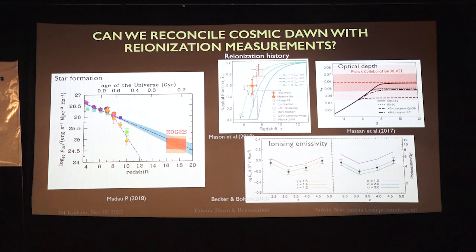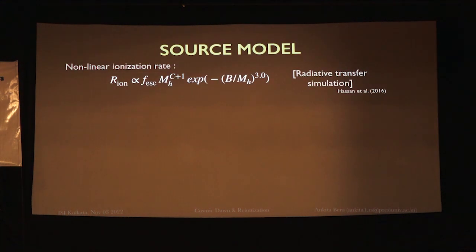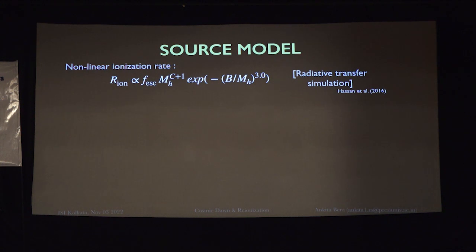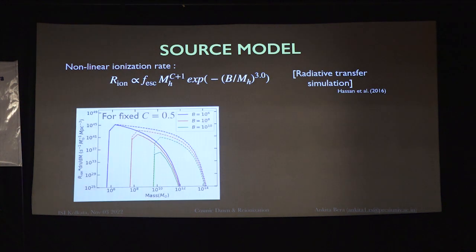So we now have all these measurements at Cosmic Dawn, reionization, and the post-reionization epoch. We then consider a physically motivated source model derived from radiative transfer simulations. This is a generalized form where the ionizing emissivity depends on the halo mass.